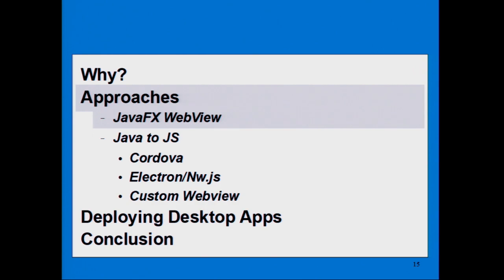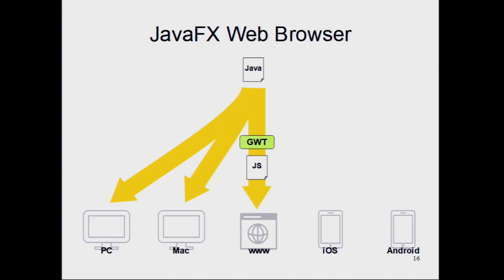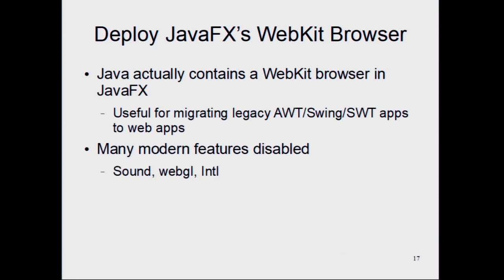The first approach is using the JavaFX WebView. The JavaFX UI framework actually has a WebKit browser you can use to display HTML pages, and it's like a real browser. It's especially useful if you have a legacy Swing or AWT app and you want to move parts of it into HTML5 — you can put a browser widget in the middle of your user interface and slowly transition your UI elements from Swing into HTML5. It is a full WebKit browser, but it's missing some modern features like Sound, WebGL, and some newer APIs like the internationalization API.